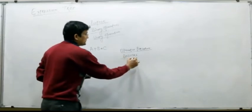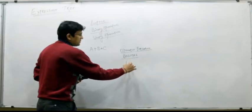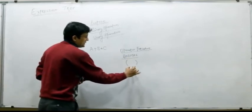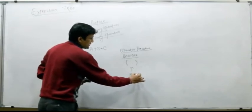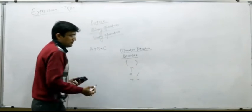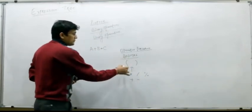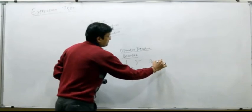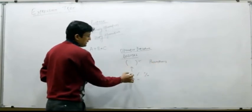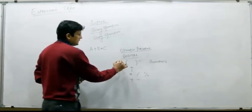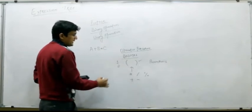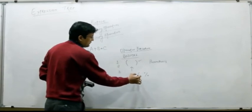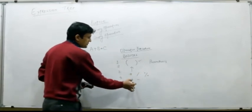A slight change in the BODMAS rule gives us operator precedence and associativity. If we have brackets, exponentiation, multiplication, division, modulus, plus, and minus, and we assign priorities: brackets have the highest priority, exponentiation the second highest, multiplication, division, and modulus the third highest — all with the same precedence among themselves — and plus and minus the fourth highest, also with equal precedence between them.